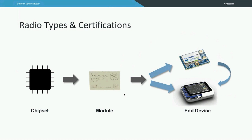We incorporate that approved module into our Skywire Nano, and then take the Skywire Nano through the full end-device certification itself. So you can simply put the Skywire Nano into your device and deploy — there's no additional testing, no additional certification, because that final category of certifications has been completed. You also have the option of taking the module, putting it into your end-device, and taking your end-device through that certification process. Either way, you end up with a fully end-device approved device that you can simply deploy and activate.